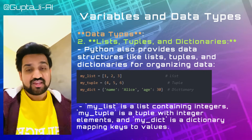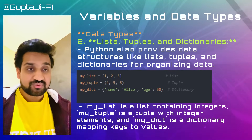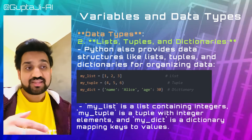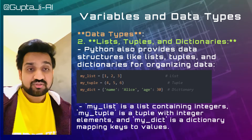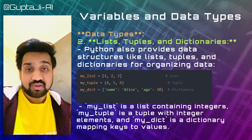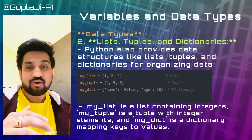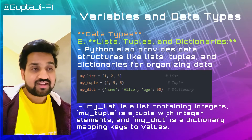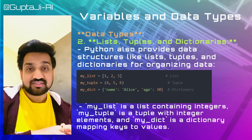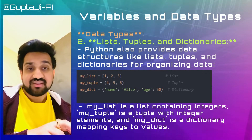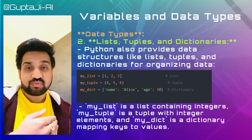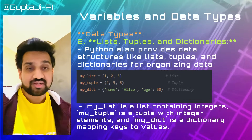For example, my_list = [1, 2, 3] represents a list containing integers. my_tuple = (4, 5, 6) signifies a tuple with ordered elements, and my_dict = {'name': 'alice', 'age': 30} creates a dictionary mapping keys to corresponding values.